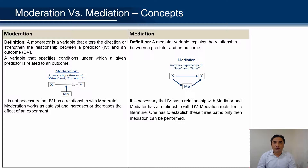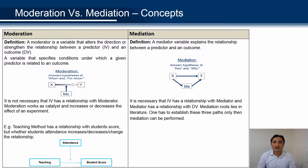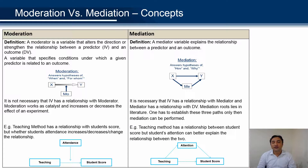Let's discuss moderation with an example. For instance, teaching can affect student scores — teaching is the independent variable and student scores is the dependent variable. Now, whether attendance can change, increase or decrease that relationship makes attendance a moderator. It is not necessary that teaching predicts attendance. On the other hand, from the literature review, we know that teaching can predict student score, and teaching can also predict attention, and then attention can predict student score.